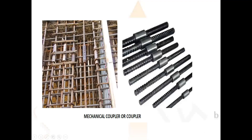Nowadays mechanical couplers are available in the market. Mechanical couplers are beneficial when the bar diameter is 16mm and above, because heavy reinforcement congestion can prevent concrete from flowing down. Using a mechanical coupler avoids this congestion.